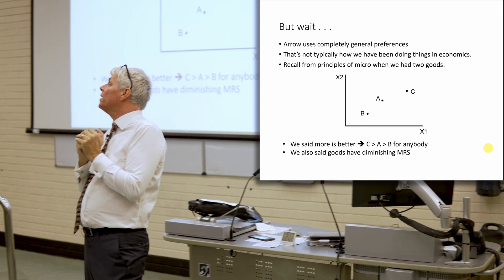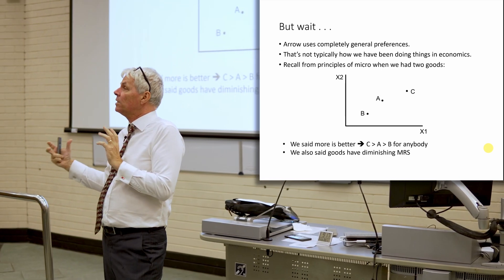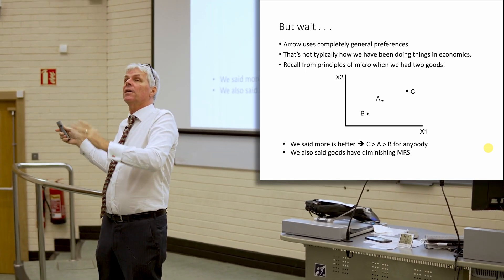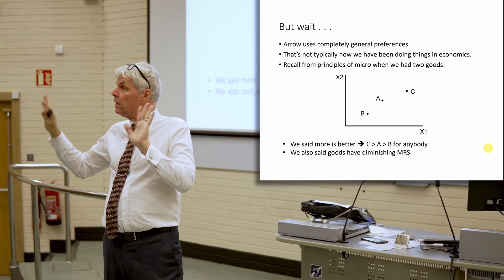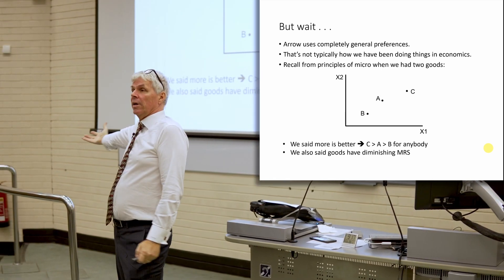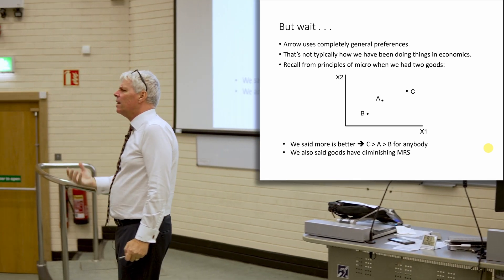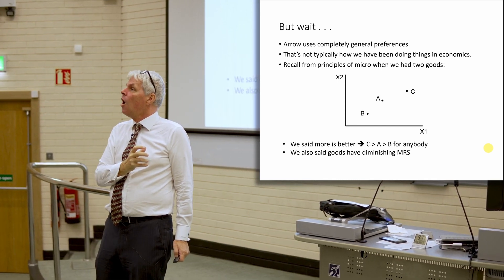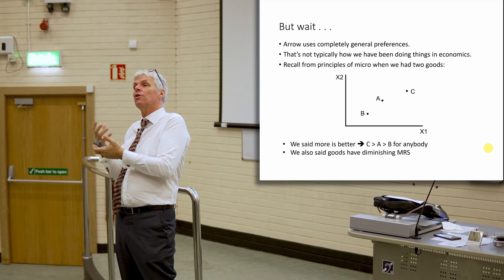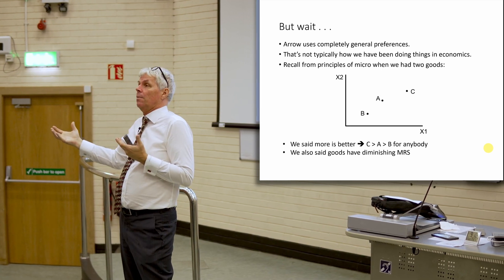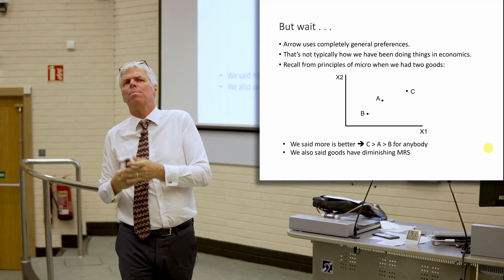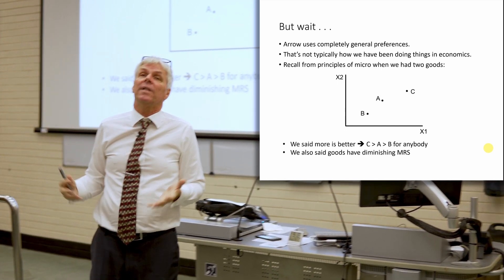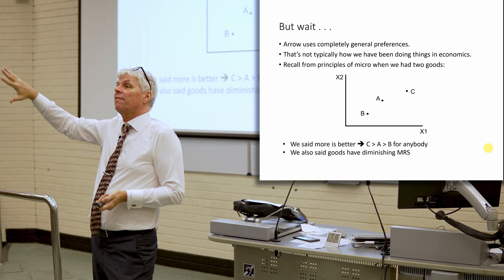So we impose a lot of structure in microeconomics on people's preferences. And so far, we haven't imposed really any structure on people's preferences in political theory, in voting theory. Mr. Arrow says, given that people have transitive preferences, we get these goofy things with voting. The way it comes out is that there can be some set of preferences in the group so that we get these goofy things. Maybe those preferences aren't very likely in real life anyway.